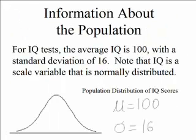We also need information about our population. For IQ tests, the average IQ is 100 and the standard deviation is 16, and this is based on the way that IQ tests are designed. Note that IQ is a scale variable — the distance between 99 and 100 is the same as between 100 and 101. And IQ is normally distributed. Like most things you can measure, they tend to be normally distributed. So our population mean is 100 and our standard deviation is 16.